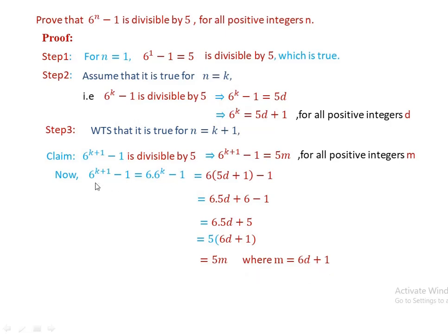This implies that 6 to the power of k plus 1 minus 1 is equal to 5 times m, which is the required result. Therefore, 6 to the power of k plus 1 minus 1 is divisible by 5, showing this is true for all positive integers n greater than or equal to 1.